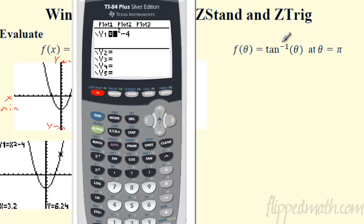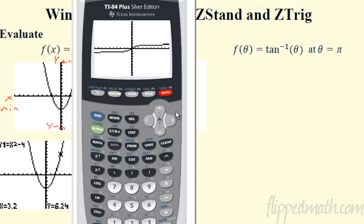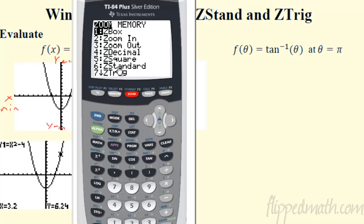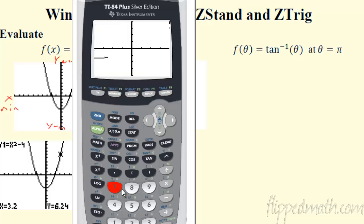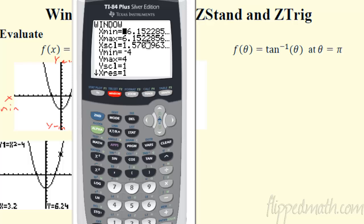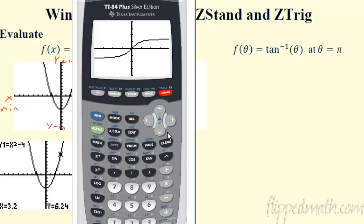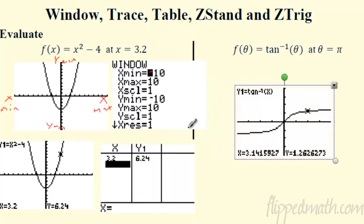For inverse trig functions: they're found above the regular trig buttons. Second + tan gives you arctan (inverse tangent). When graphing trig functions, rather than zoom standard, use zoom 7 — zoom trig. This gives you a nice trig window from −2π to 2π, with y from about −4 to 4. If you want to evaluate at π, hit trace, type π, hit enter — there it is.